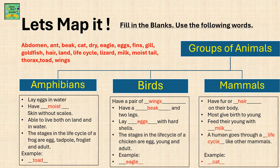The stages in the life cycle of a frog are egg, tadpole, froglet, and adult. An example is a toad.